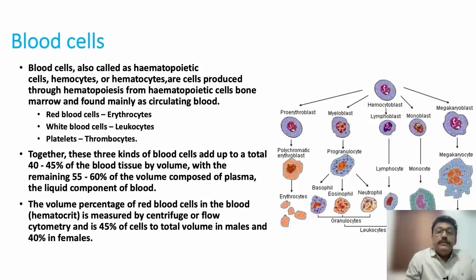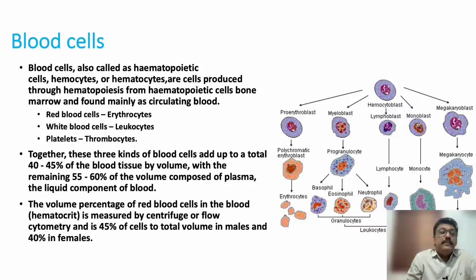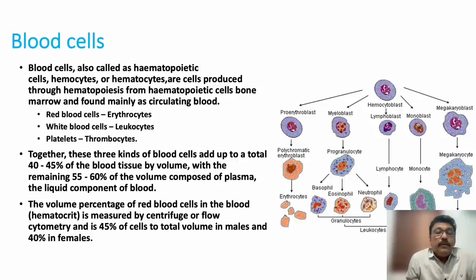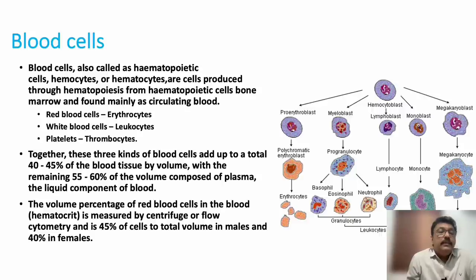Within WBCs there are different types: basophils, eosinophils, neutrophils, lymphocytes, and monocytes. The volume percentage of RBCs in blood is called hematocrit. The normal hematocrit value is 45% in males and 40% in females.